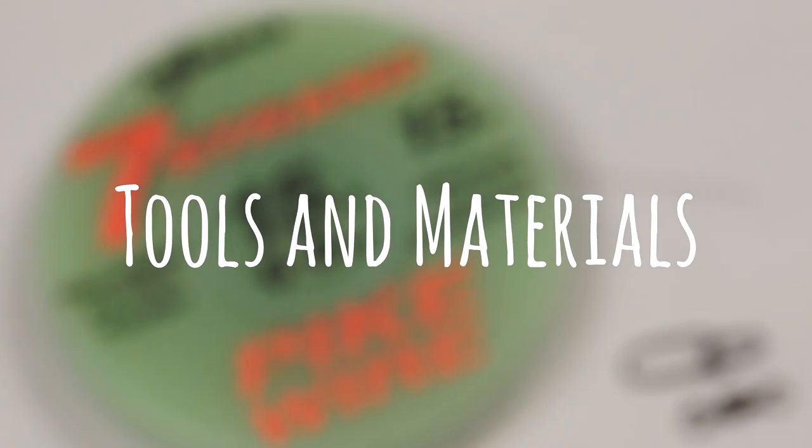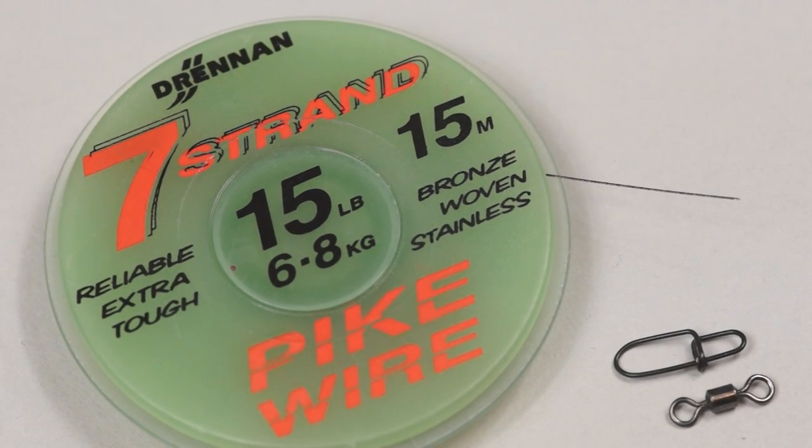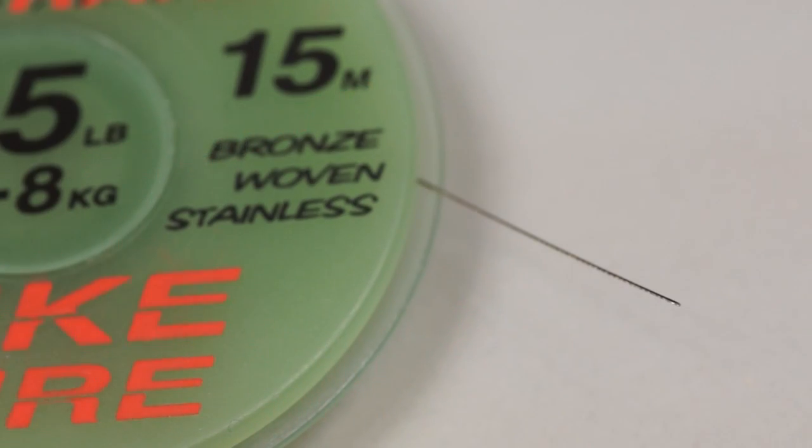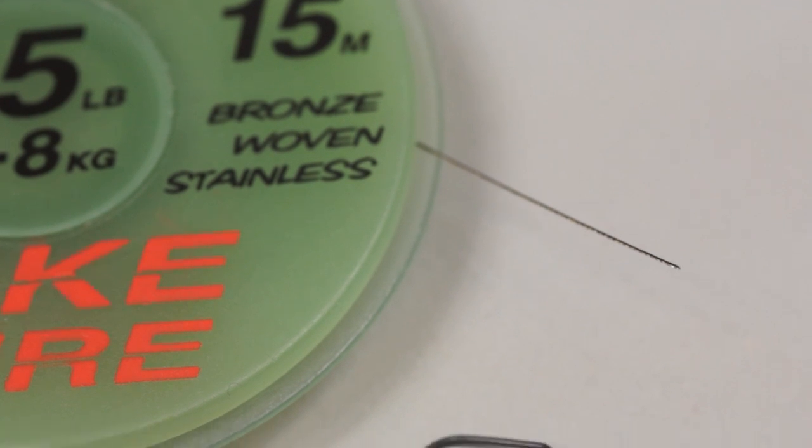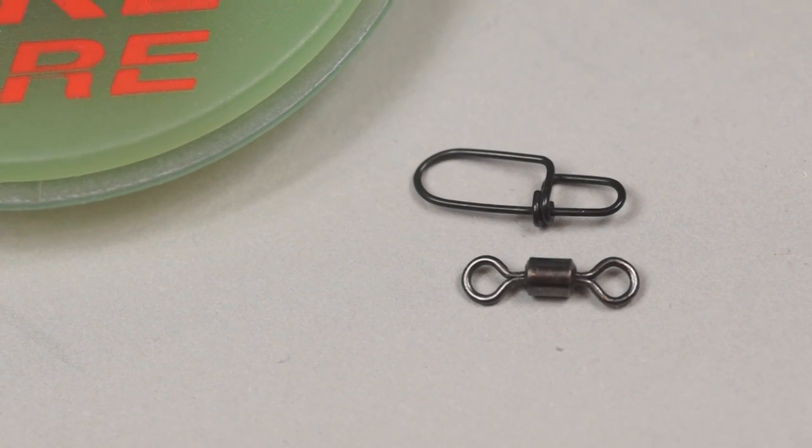For wire I'm using an uncoated 7 strand stainless steel which at £15 is incredibly fine. I'm matching this with a strong but lightweight egg snap and a number 10 swivel.